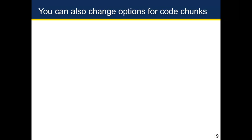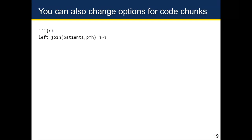So far we've talked about changing the header options, which affect the entire R Markdown document. You can also change individual code chunk options. We'll talk about three options you might want to adjust in order to make your code more consumable to someone who doesn't know R.